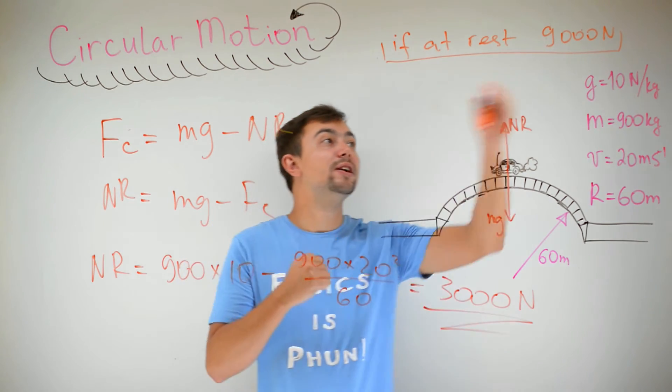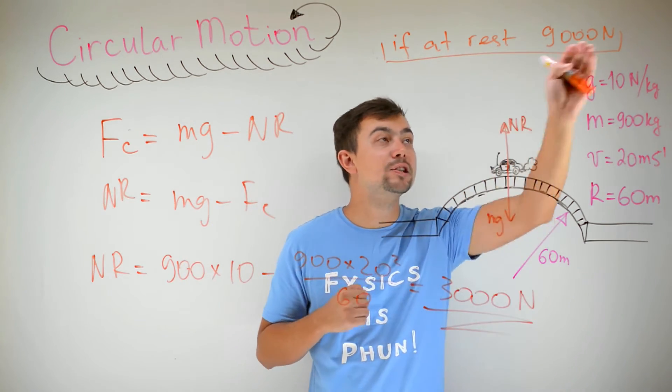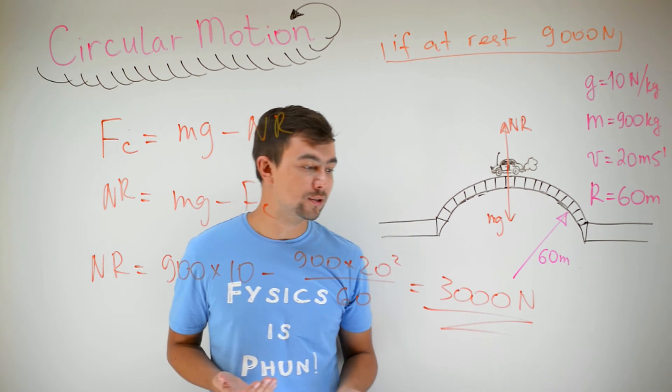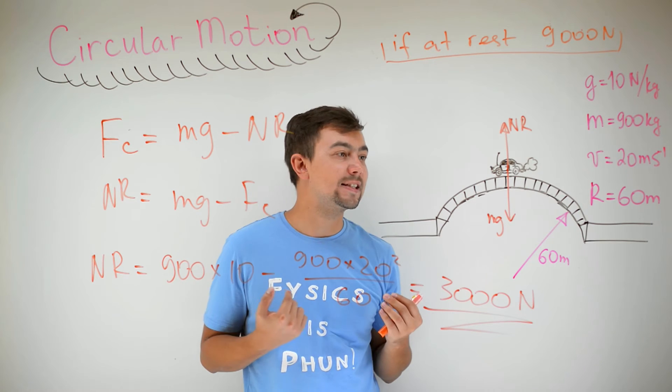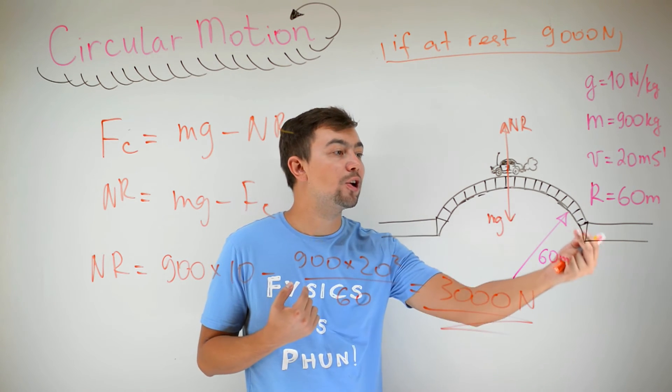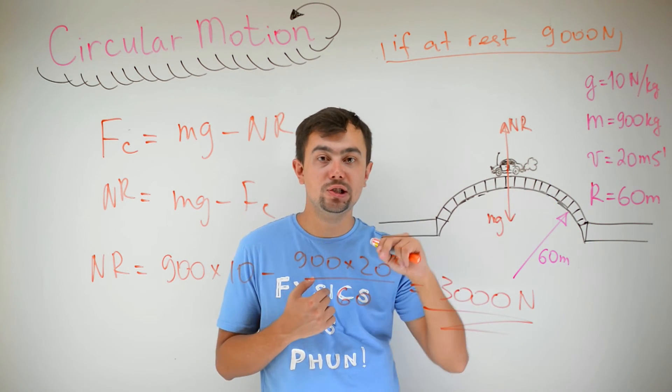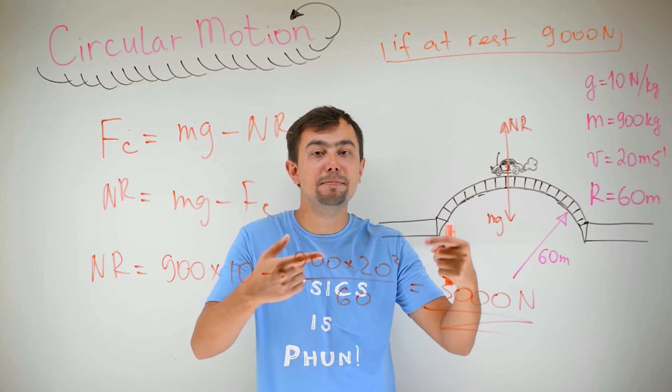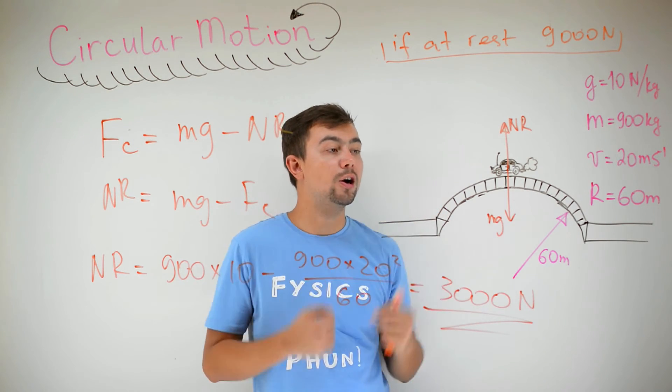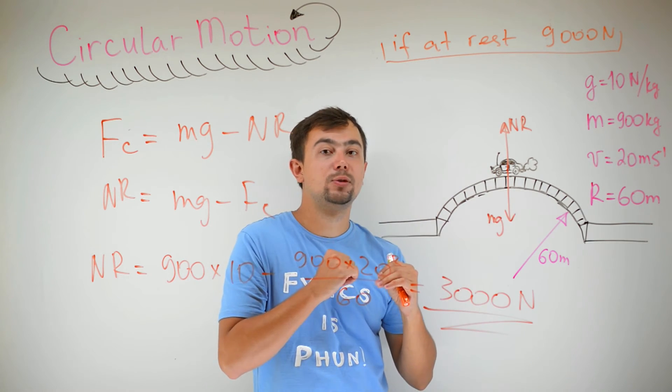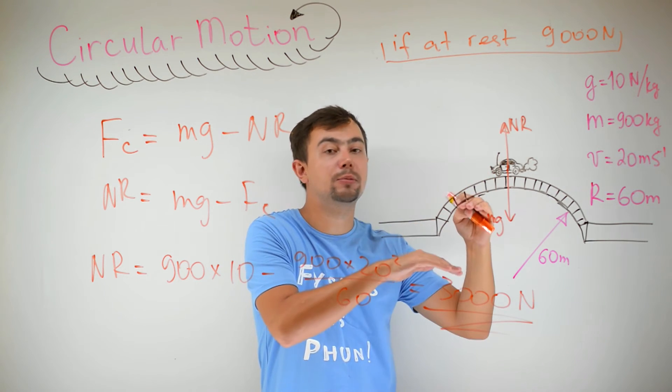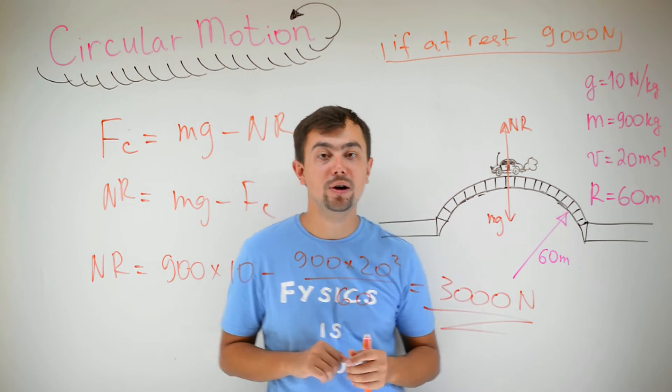This is an important result. Remember, when the car was stationary, the reaction force was 9000 newtons. And when the car is moving, it's 3000 newtons. So it's three times less. In fact, the curved shape of the bridge reduces the impact of the car on the bridge. So, it reduces the force with which the car acts on the bridge and the bridge acts on the car.